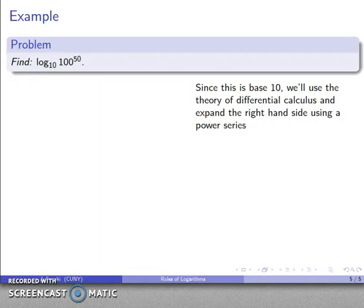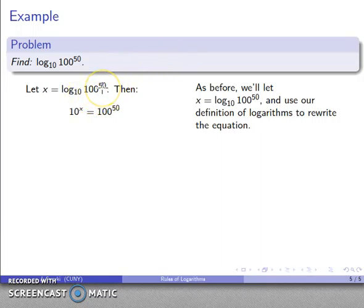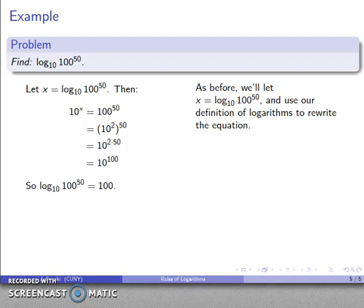Since this is base 10, we can actually do this exactly the same way we've done all the other logarithmic problems. It doesn't matter what the base is. I let x be this expression and use the definition of logarithms to rewrite the equation. The base is 10, the argument is 10 to the power of 500 — that's 10 squared to the power of 50. Using the rules of exponents, that's 2 times 50, which is 100. So 10 to the x equals 10 to the 100, meaning x equals 100.